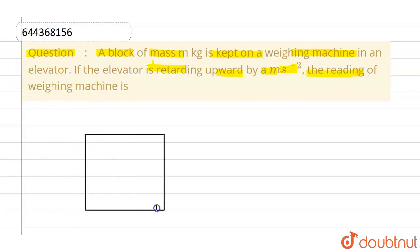So let us assume this is the elevator and in this elevator, let's say this is the weighing machine and this is the man. Now this elevator is accelerating upwards with acceleration of a meter per second square.